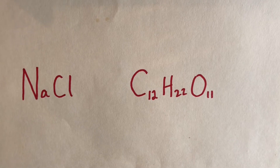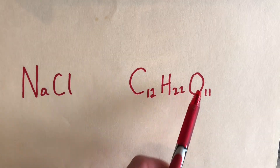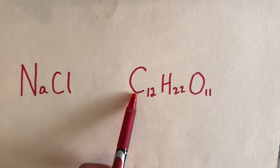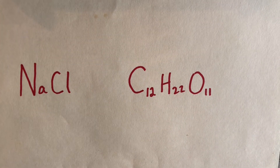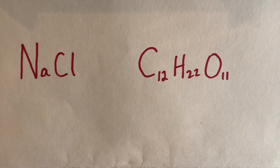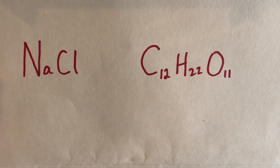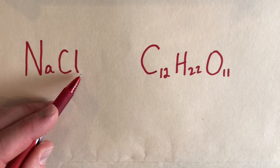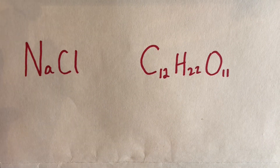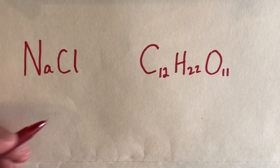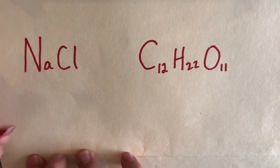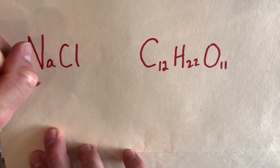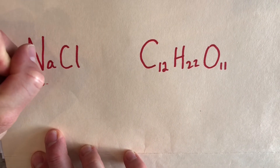And over here for sucrose we have three elements: capital C for carbon, capital H for hydrogen, and capital O for oxygen. Calculating the molar mass for the ionic compound NaCl, sodium chloride — look how there is no small number next to the Na or Cl. There are no subscripts, so we can just assume there's one of each, one Na and one Cl. So all we need to do is use our trusty periodic table.